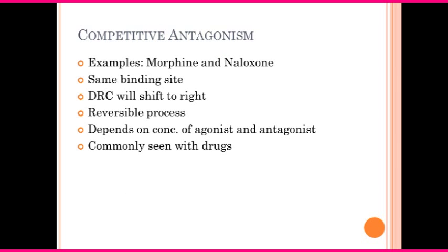The best example of competitive antagonism would be morphine and naloxone. To summarize: two substances — agonist and antagonist — bind to the same site. The DRC will shift to the right. It is a reversible process, depending upon the concentration of agonist and antagonist. It is commonly seen with drugs in clinical practice.